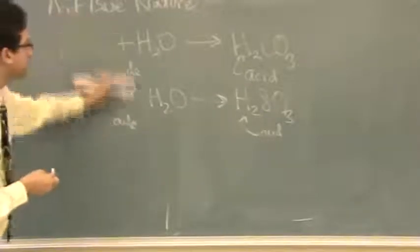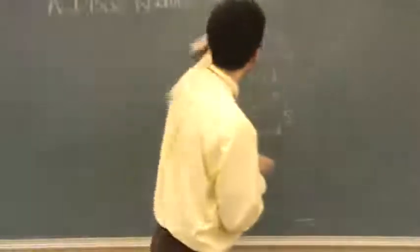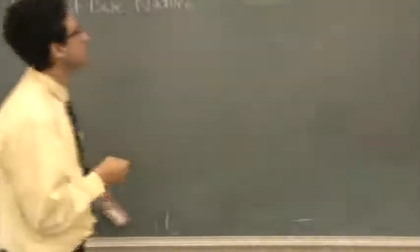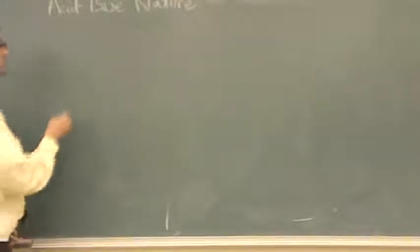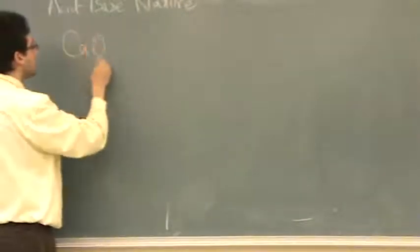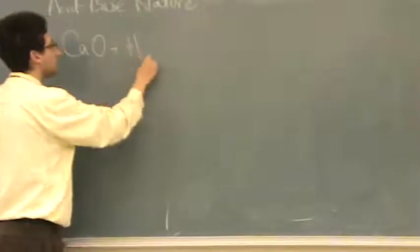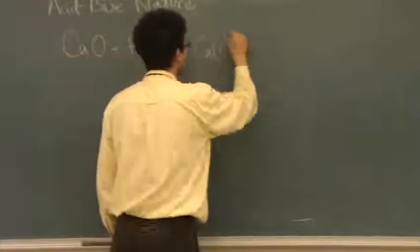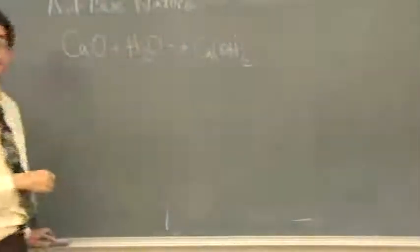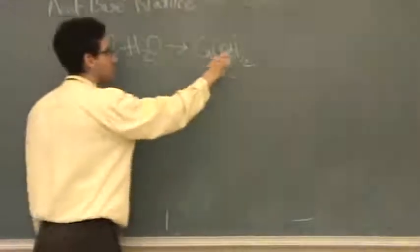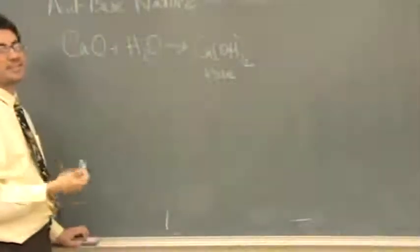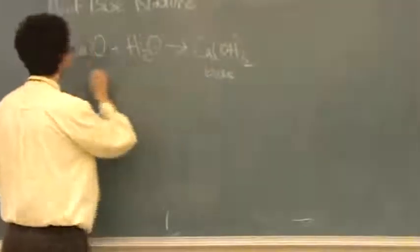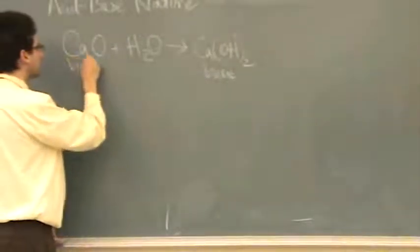The opposite is true for metals. So let's see, we've got calcium oxide plus water. That's kind of our template for this. It goes to calcium hydroxide. That is what? It's a base, calcium hydroxide. Whenever you see an OH and it's not organic, it's going to be a base. So we call this a basic oxide.